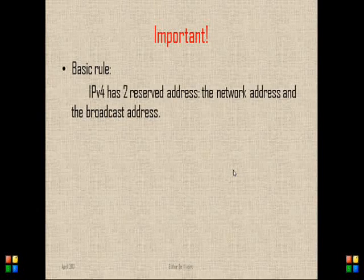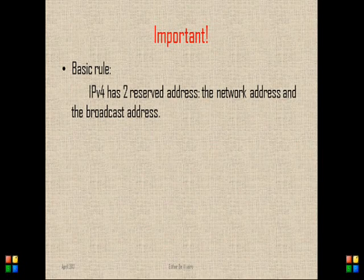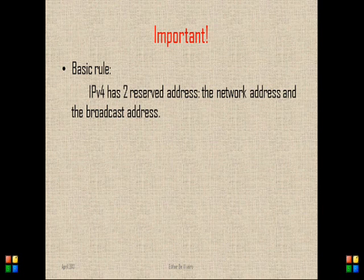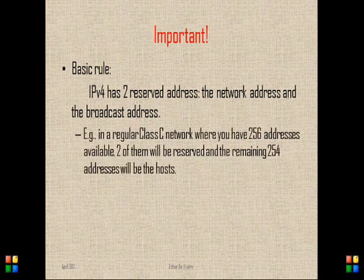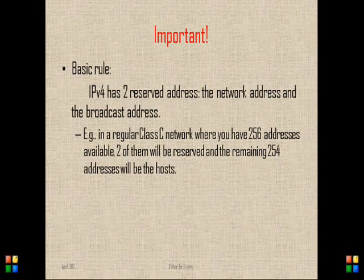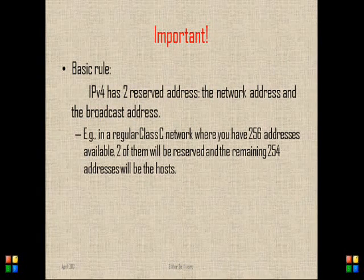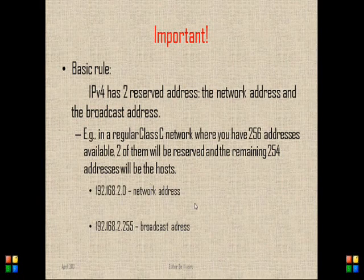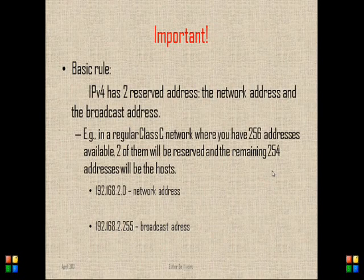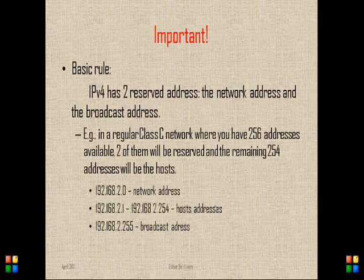IPv4 has two reserved addresses in every network: the network address and the broadcast address, being the first and the last addresses on the network. For example, in a regular Class C network where you have 256 addresses available, two of them will be reserved — the first and the last — and the remaining 254 addresses will be the hosts.